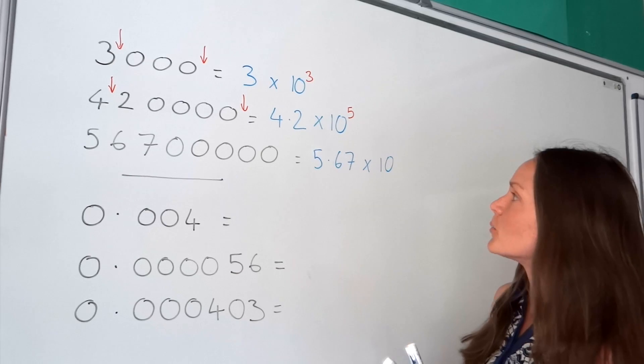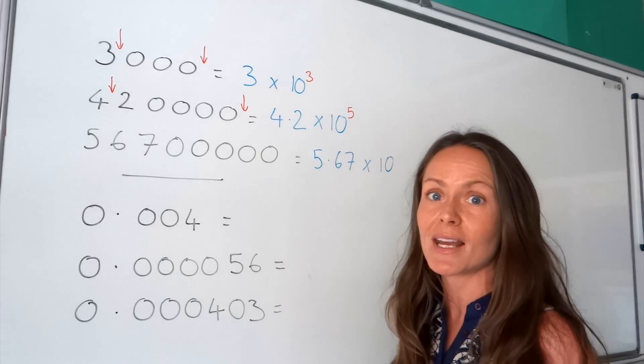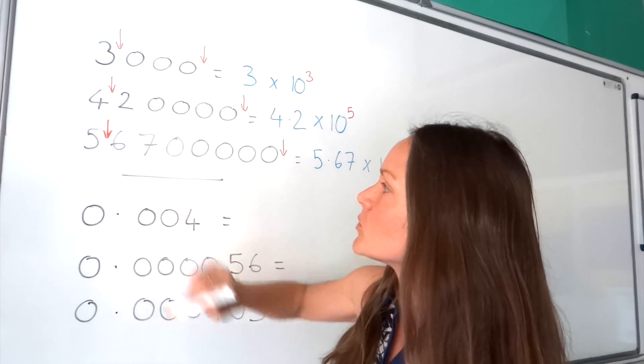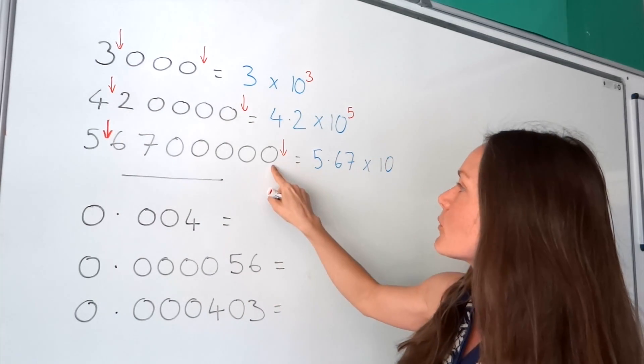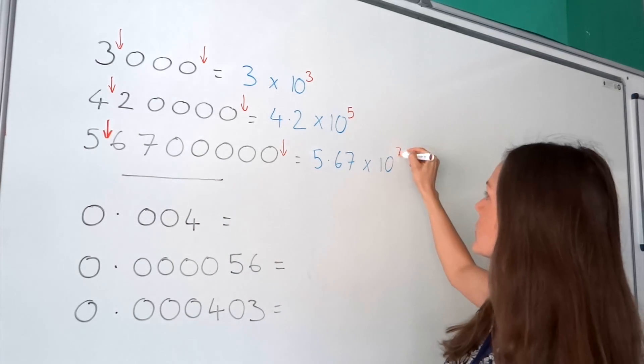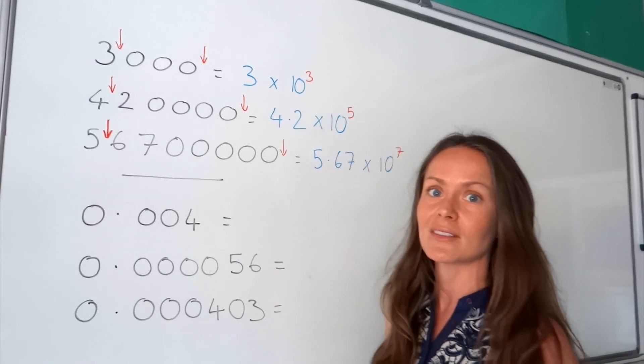And then to find the power, you check to see how many places the decimal has moved. So it used to be there and now we're placing it between the 5 and the 6. So if I count the digits here, I've got 7. So that gives me the power on the last question.